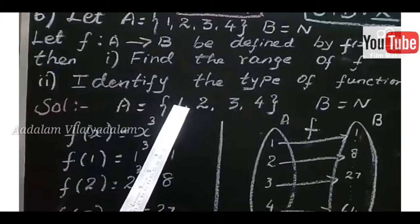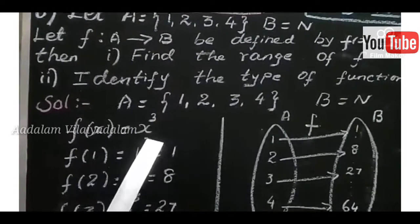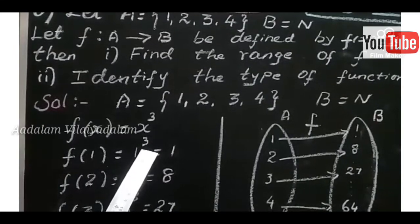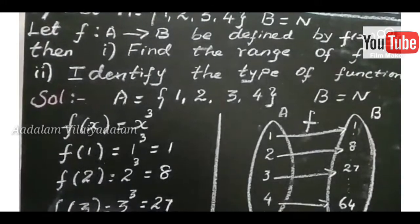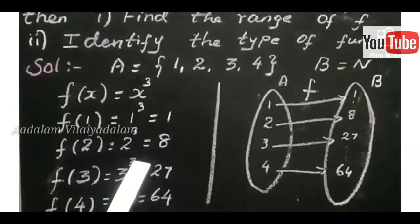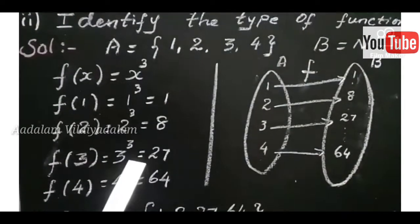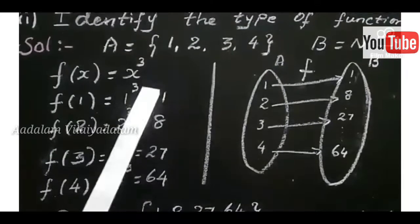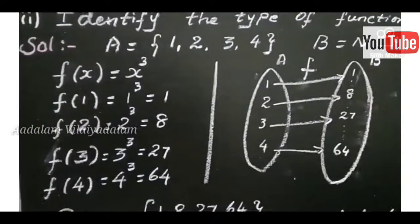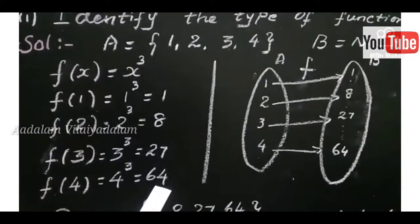Now we substitute X equal to 1: F of 1 equals 1 cube, which is 1. F of 2 equals 2 cube, which is 8. F of 3 equals 3 cube, which is 27. F of 4 equals 4 cube, so 4×4=16 and 16×4=64. So the range equals {1, 8, 27, 64}.